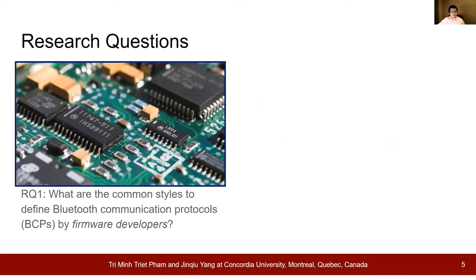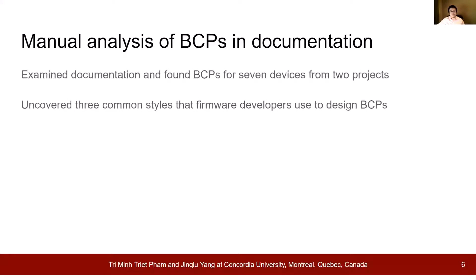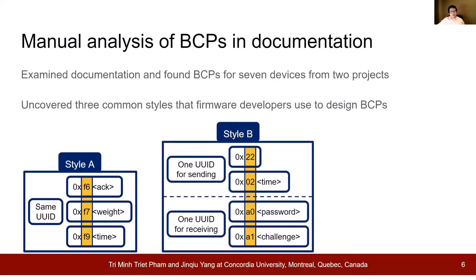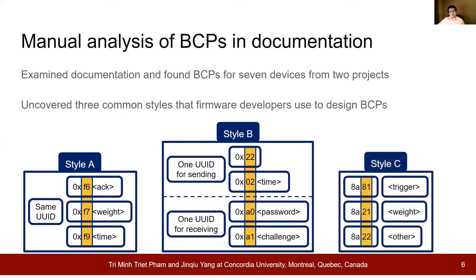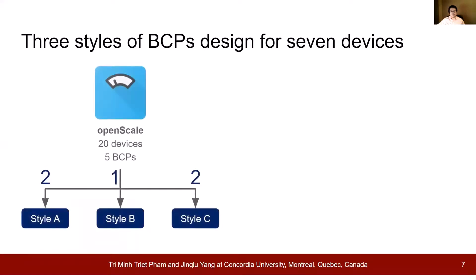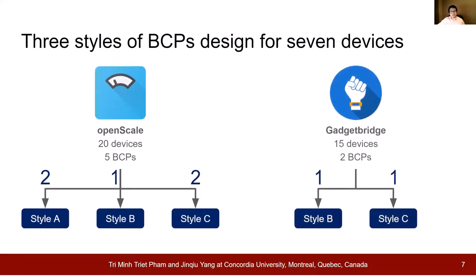First, we'll explore RQ1. From our examination of the documents detailing the communication protocols in our dataset, we observe three styles of BCP designs. Style A, where all the commands use only one characteristic UUID and the first few bytes serve as the unique command identifier. Style B, where all commands use one of two characteristics — one for sending and one for receiving — and the first few bytes serve as the unique command identifier. And Style C, where each functionality uses one characteristic. In the first project analyzed, there are two BCPs that follow Style A, one that follows Style B, and two that follow Style C. In the second project, Style B and Style C each has one BCP.